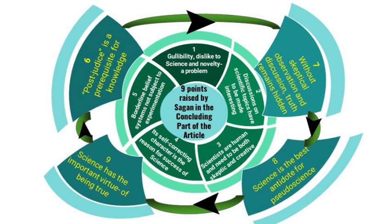The seventh point is that for truth to come out, two things are essential: skeptical observation and discussion. Truth comes out only through these two means. The eighth point is that science is the best antidote — meaning cure — for pseudoscience. If we have to put an end to pseudoscience, we can do that only by accepting science. The ninth and last point, in the concluding paragraph, beautifully states the most important virtue of science: science is truth.